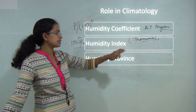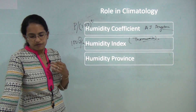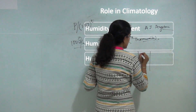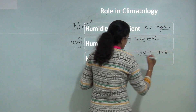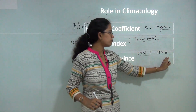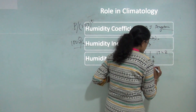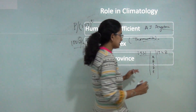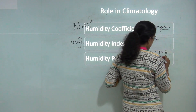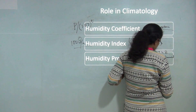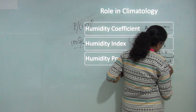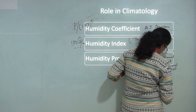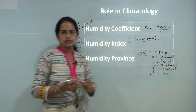Thornthwaite also gave the concept of humidity province, where he tried to explain various regions based on humidity. He produced two classifications: one in 1931 and another in 1948. In both cases he divided regions into five provinces: A, B, C, D, and E. In 1948 he named them as perhumid, humid, subhumid, semi-arid, and arid.